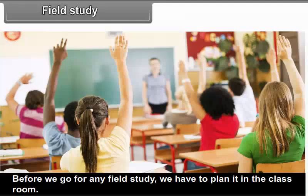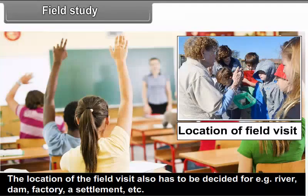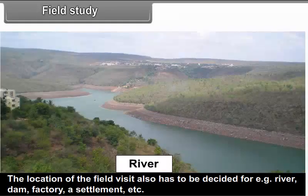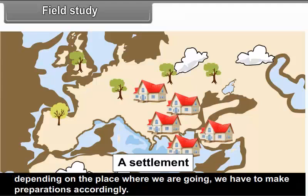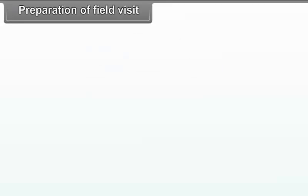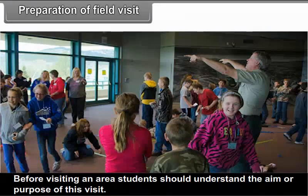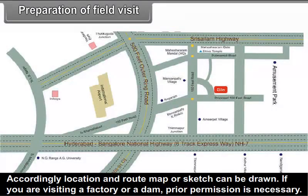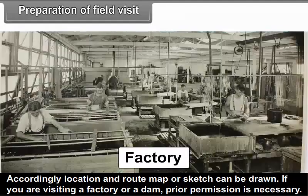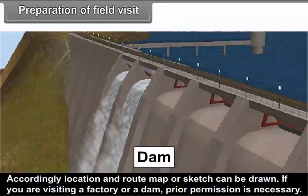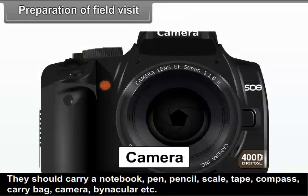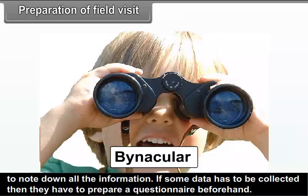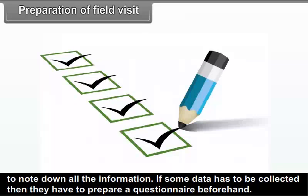Preparation for a Field Visit: Before going for any field study, it must be planned in the classroom, and the location of the field visit has to be decided — for example, a river, dam, factory, or settlement. Students should understand the aim or purpose of the visit, and a location and route map or sketch can be drawn. If visiting a factory or a dam, prior permission is necessary. They should carry a notebook, pen, pencil, scale, tape, compass, carry bag, camera, binoculars, etc. to note down all information. If data has to be collected, a questionnaire must be prepared beforehand. Students may also carry bags to collect samples of soils or rocks.